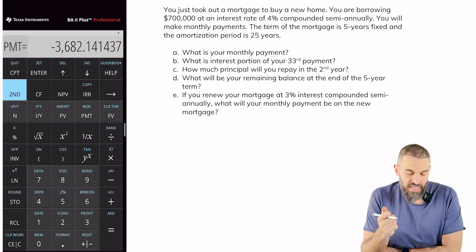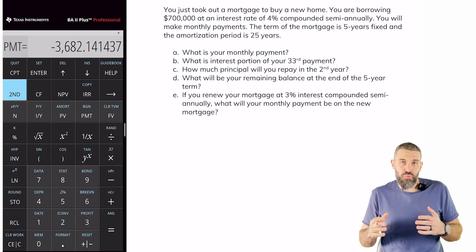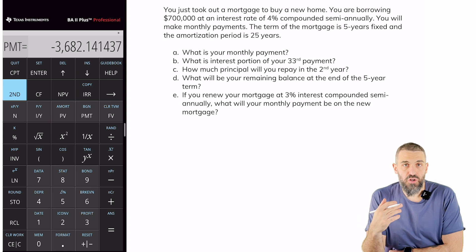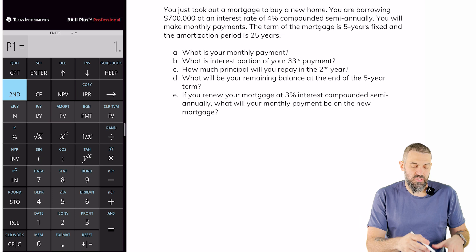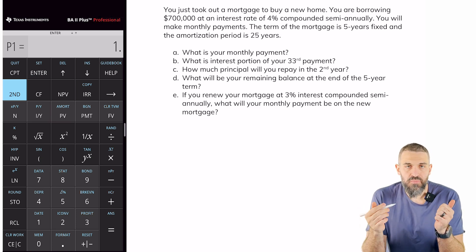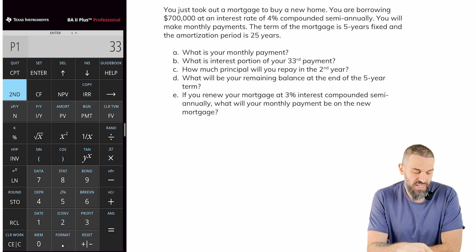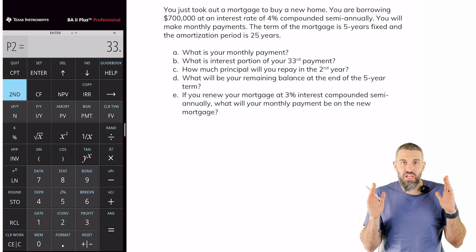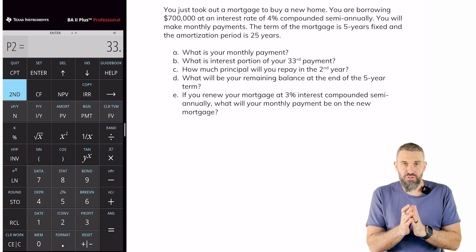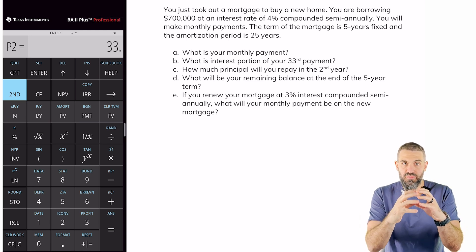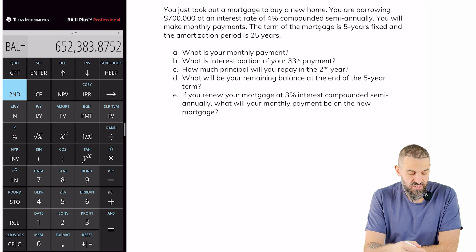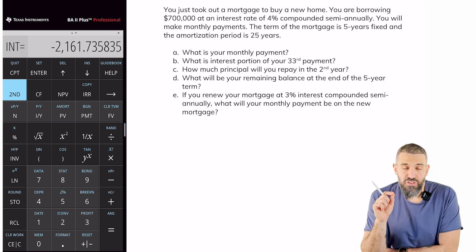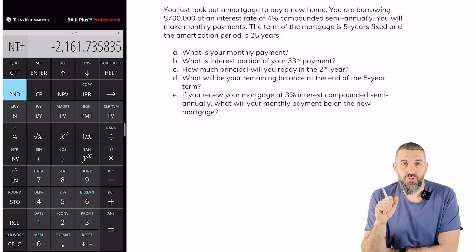The second question is: what is the interest portion of the 33rd payment? When you want to find the interest portion of a specific payment, the fastest way is to use the amortization function on the calculator. Press second, amort — which is the present value button. The calculator will ask which payment you want. We want the 33rd, so enter P1 = 33, enter, down, then P2 = 33, enter. P1 and P2 both being 33 means the calculator will only give us information about the 33rd payment — think of it as an interval for only that payment. Scroll down and you can see the balance, the principal portion, and here is the interest portion: $2,161.74 of the 33rd payment will be paid to the bank as interest.